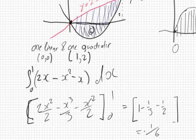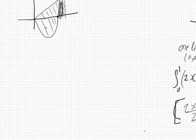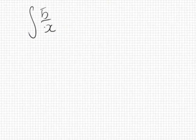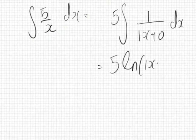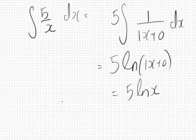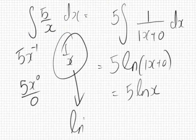A question about integrating 5 over x. This looks like 5 times 1 over x, and it has its own special rule. If you tried the power rule you'd get 5x⁰ over 0, which is undefined. So 1 over x is a special case — its anti-derivative is always log x. Therefore the integral of 5 over x is 5 log x.